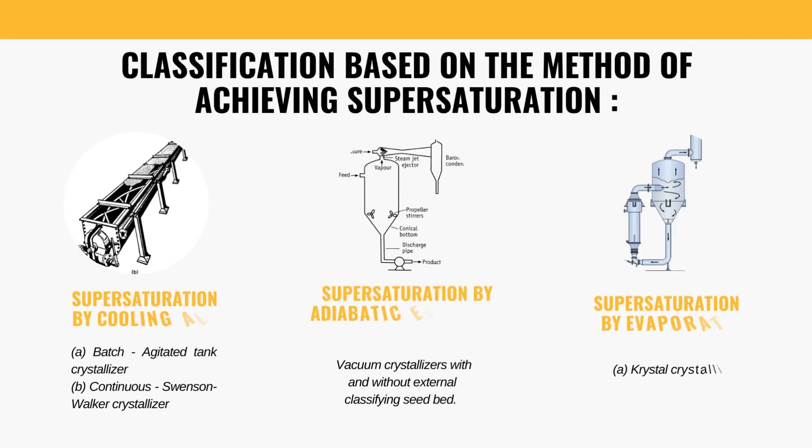Summarizing the classification based on the method of achieving supersaturation: there are three types. The first is supersaturation by cooling alone. Imagine making crystals by cooling down a liquid mixture. This can be done by two types: first, the batch agitated tank crystallizer, which is like a big stirring pot where the mixture cools and crystals form inside; and second, the continuous Swenson Walker crystallizer, which is like a crystal-making conveyor belt where the mixture moves along, cools, and crystals appear step by step.